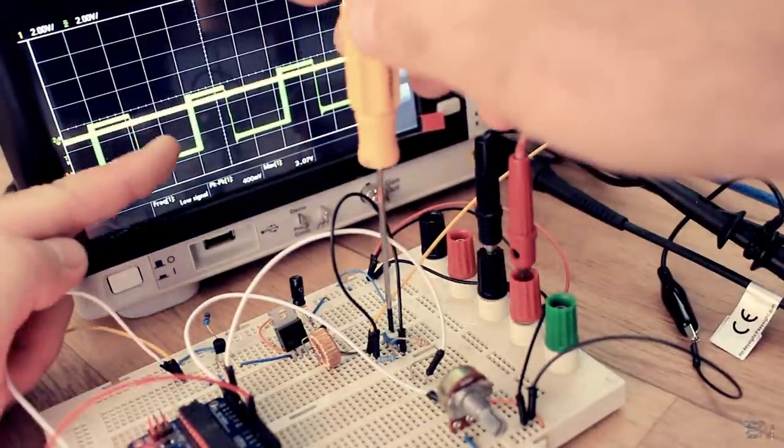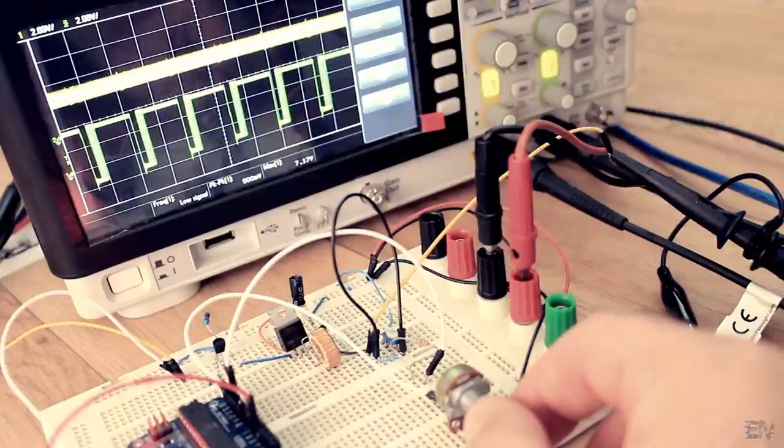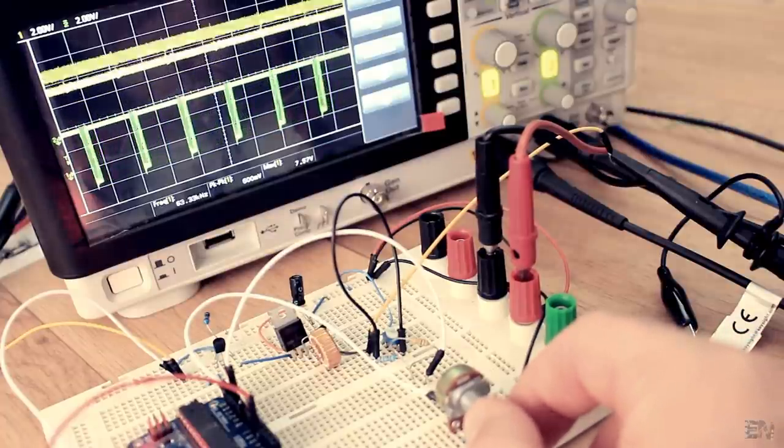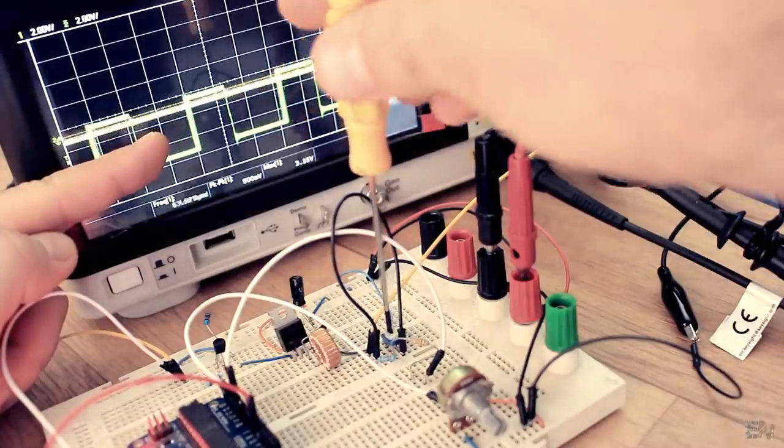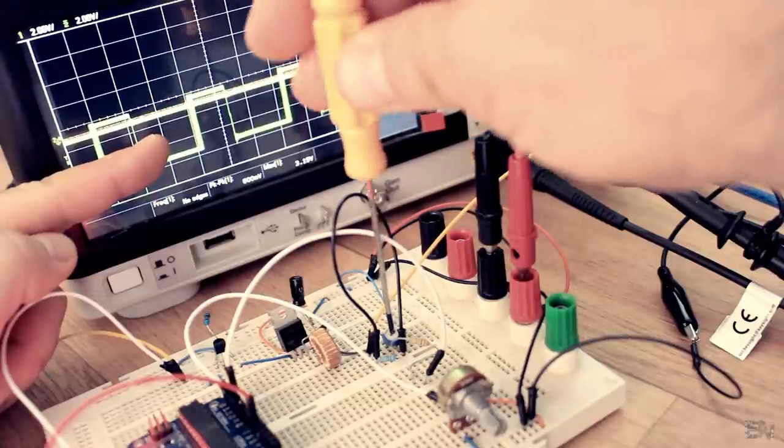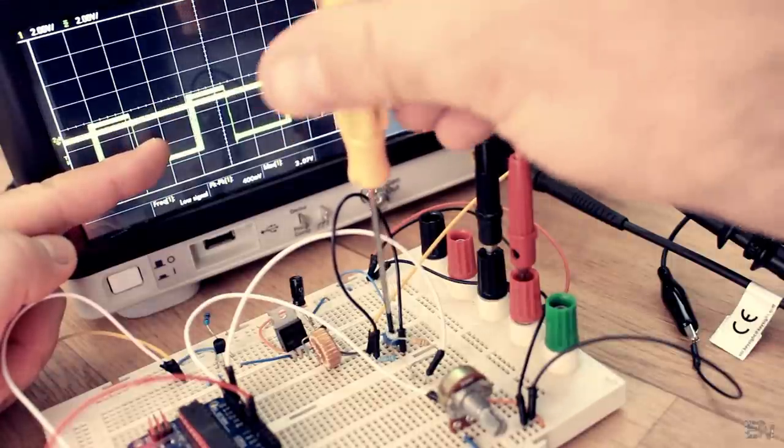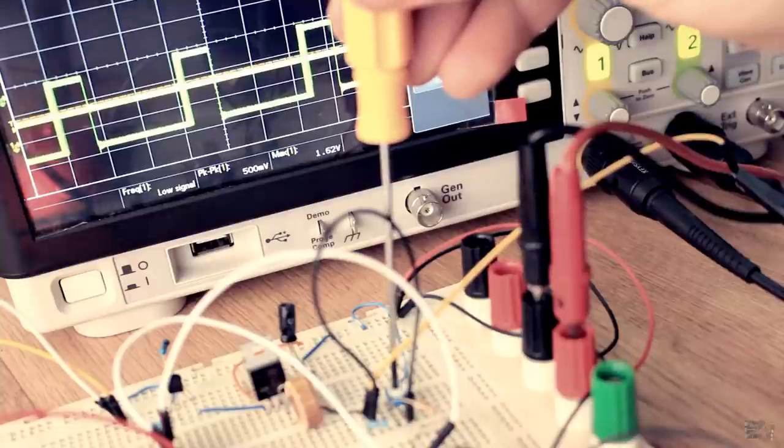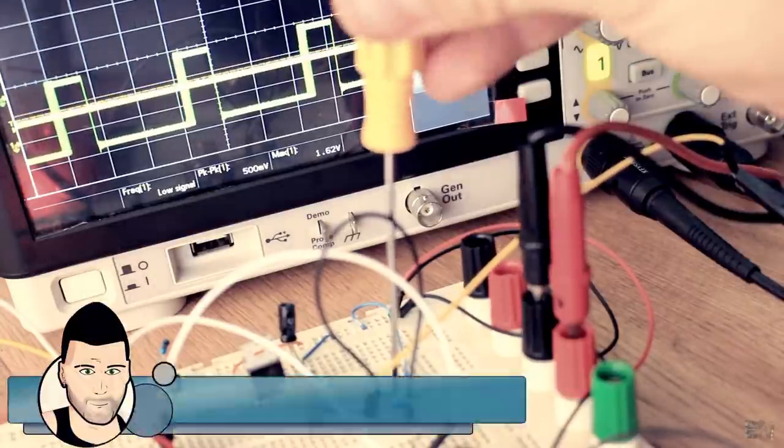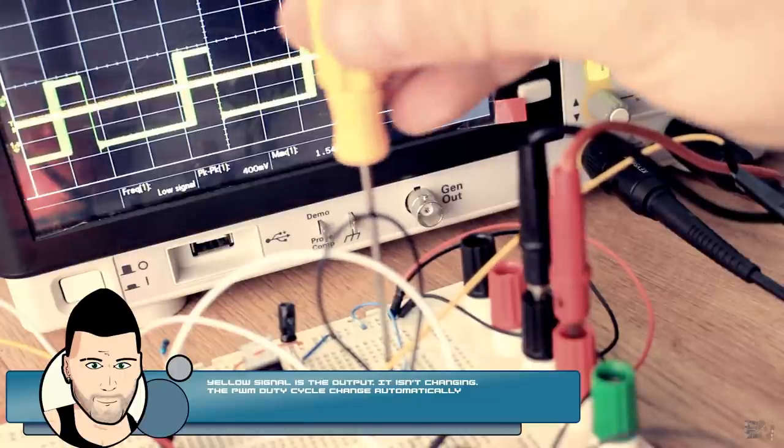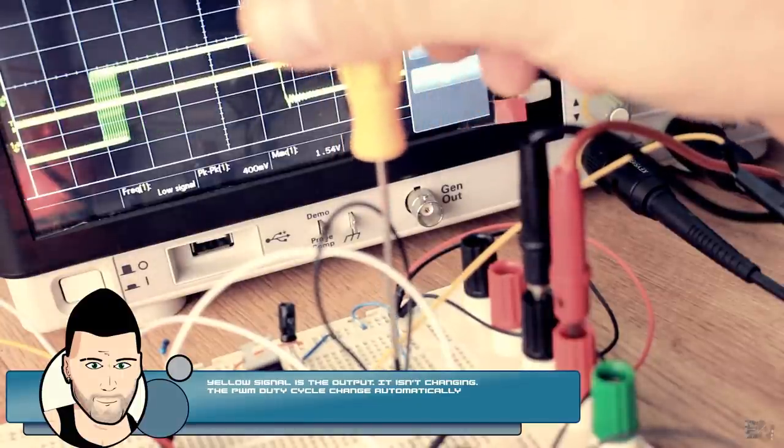Here as you can see, I can still change the output value using the potentiometer. But now I change the output load with this potentiometer here and the output is the same. The only thing that changes automatically is the PWM duty cycle. As you can see now on the oscilloscope, the PWM signal is bouncing a lot, in order to maintain always the same output.